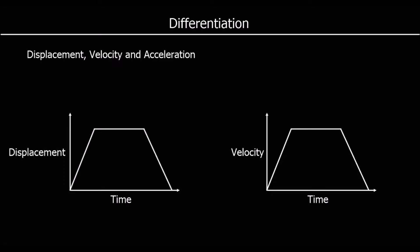In this video we are looking at displacement, velocity and acceleration. Displacement is like distance but with a direction. So a distance could be 5 meters; a displacement is 5 meters east. We measure displacement in meters. Velocity is the rate of change of the displacement, measured in meters per second. And acceleration is the rate of change of the velocity, so that's meters per second squared.